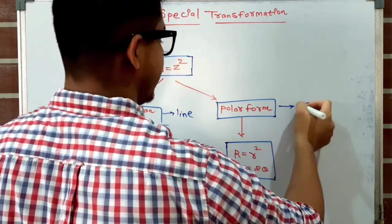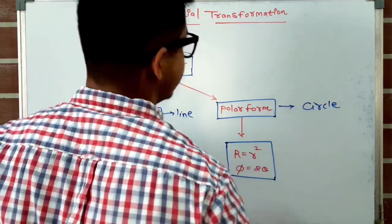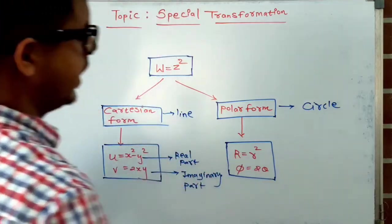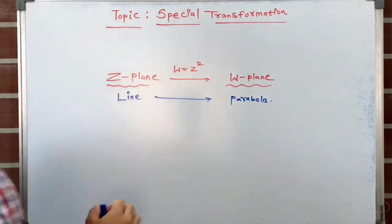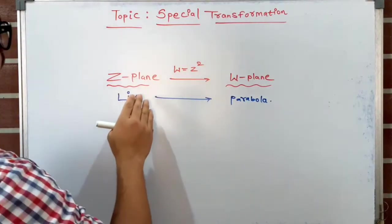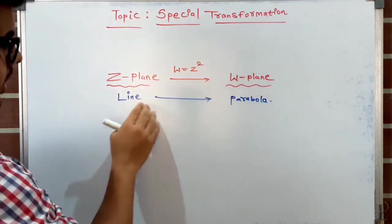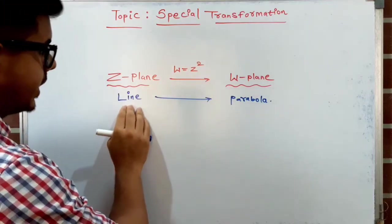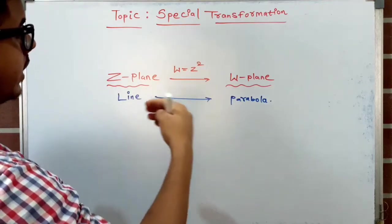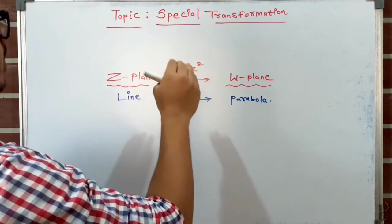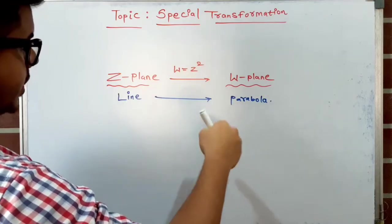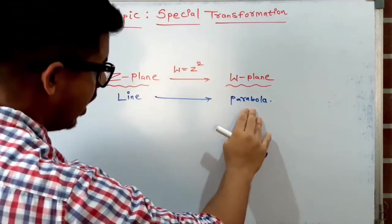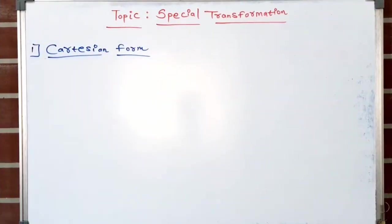Note an important point: whenever in the z-plane the equation of a line is given, we can convert that line using the w = z² transformation into a parabola in the w-plane.